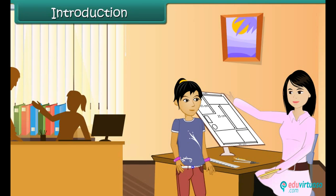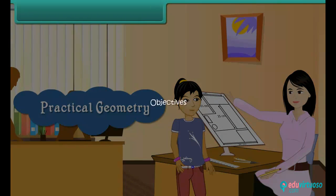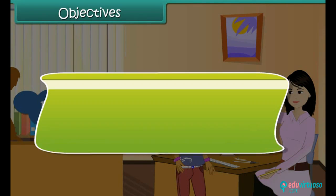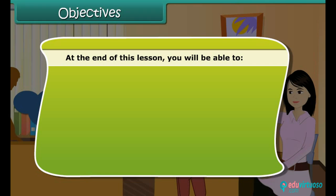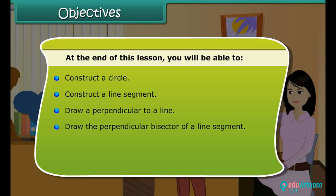In this lesson, you will learn practical geometry. Objectives: At the end of this lesson, you will be able to construct a circle, construct a line segment, draw a perpendicular to a line, draw the perpendicular bisector of a line segment, draw the bisector of an angle, and construct angles.